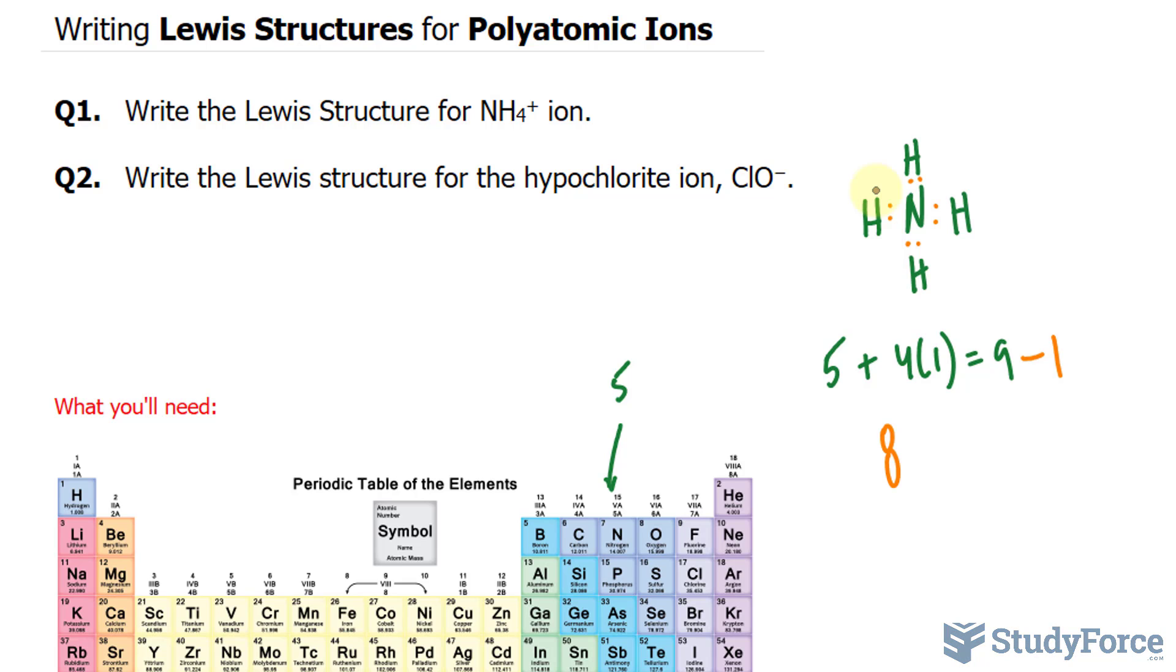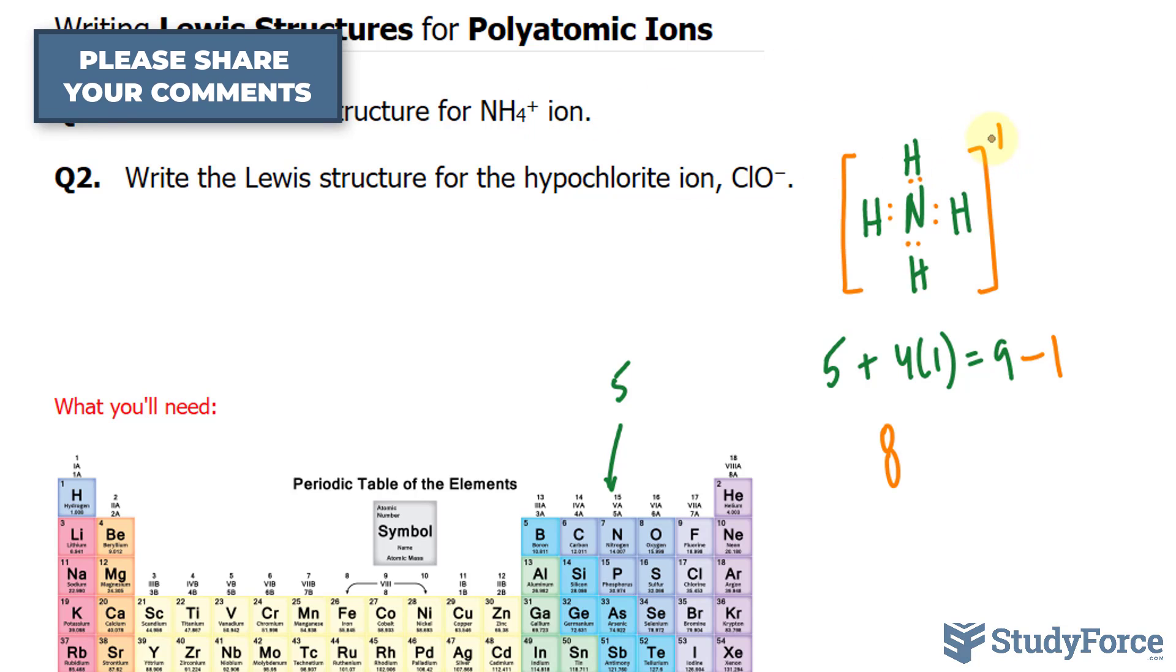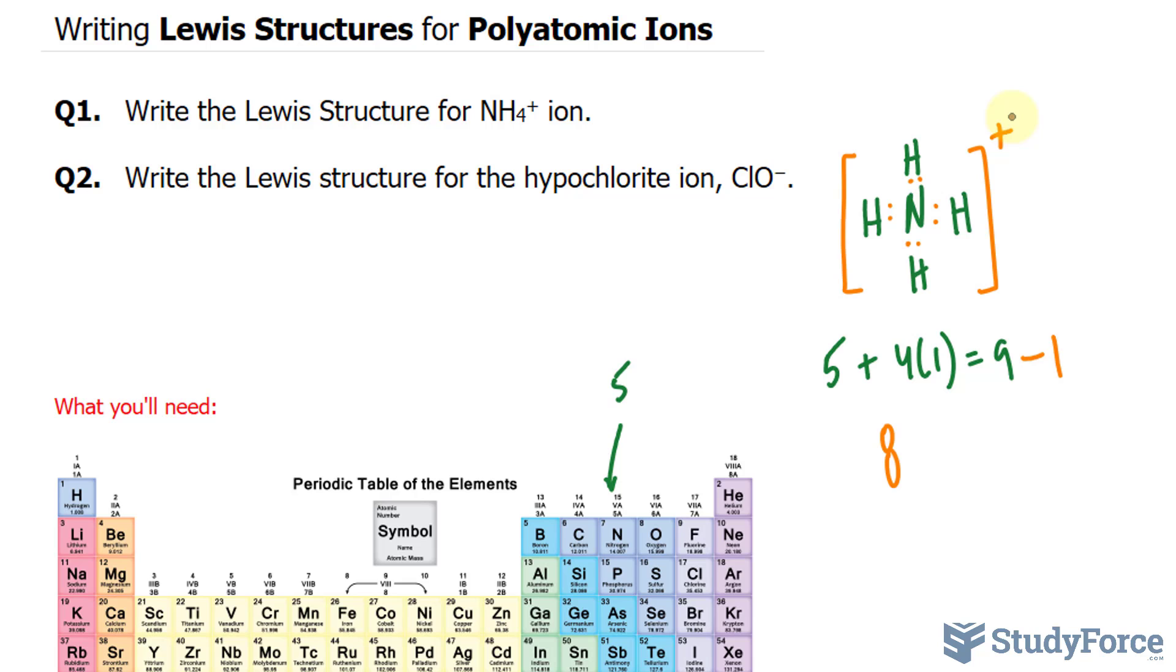Finally, once you've done this, write the Lewis structure in brackets and show the charge. So we'll introduce these brackets. And since it's plus, we'll write down plus in the top right corner. That's the answer to question number one.